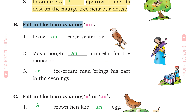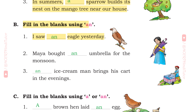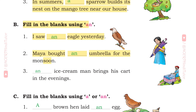B. Fill in the blanks using AN. 1st: I saw an eagle yesterday. 2nd: Maya bought an umbrella for the monsoon. 3rd: An ice cream man brings his cart in the evenings.